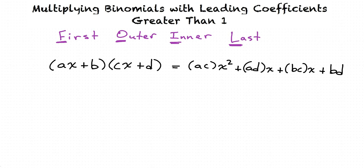In other words, we first multiply the first terms of each binomial together, then we multiply the outer terms, the inner terms, and finally the last terms of each binomial. The product is the sum of these terms.